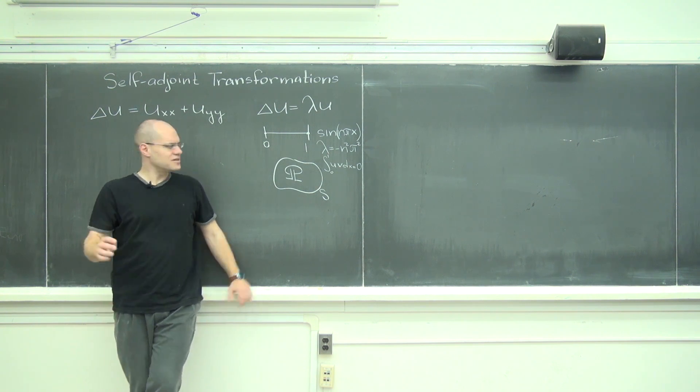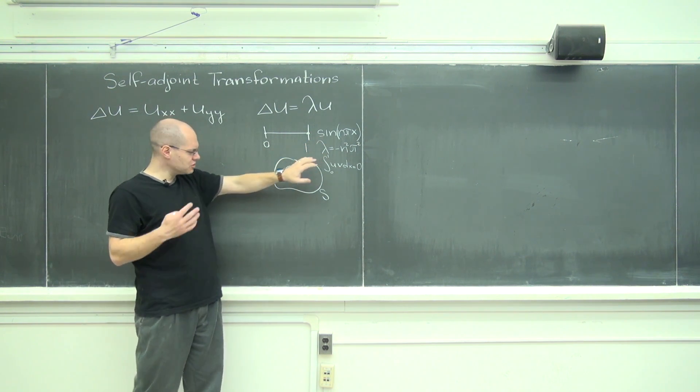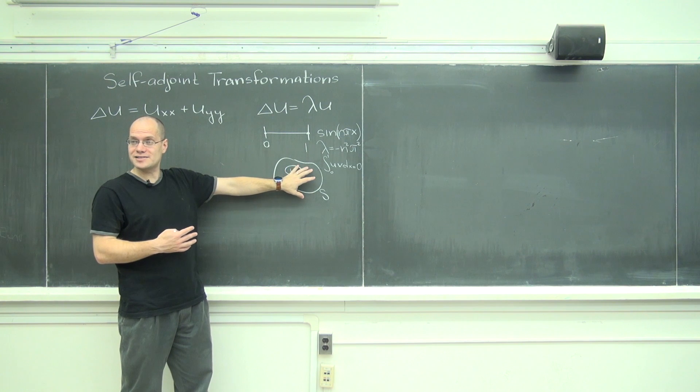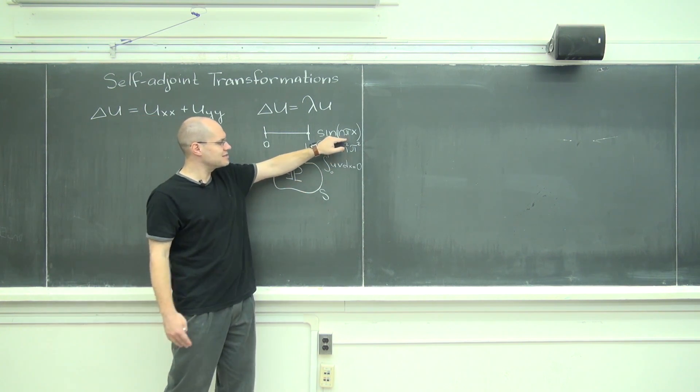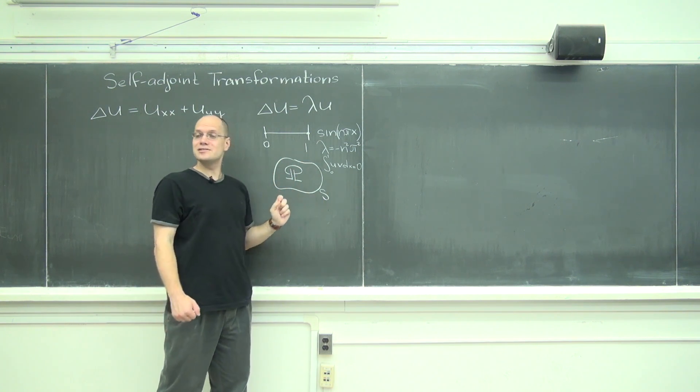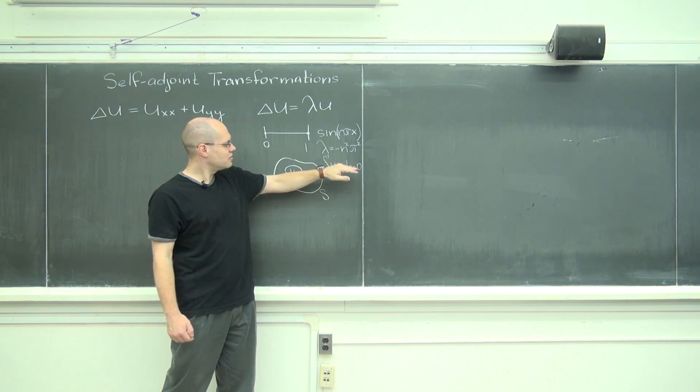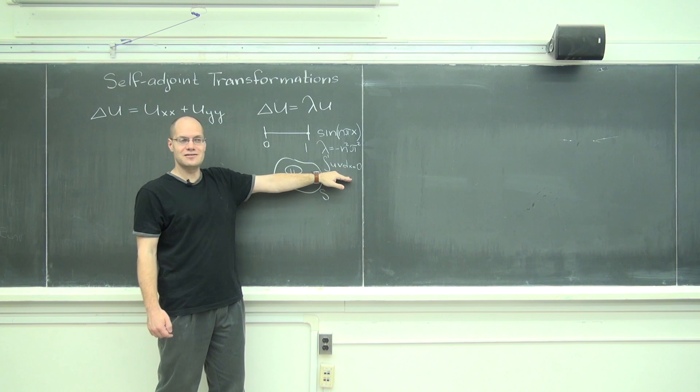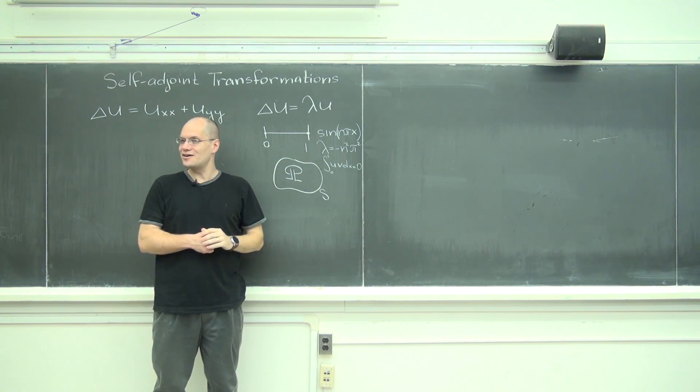So yes, the second derivative operator, or generalized to higher dimensions the Laplace operator, has the property that its eigenfunctions, if we restrict our attention to the ones that equals zero on the boundary, their eigenfunctions are orthogonal and all of the eigenvalues are negative.